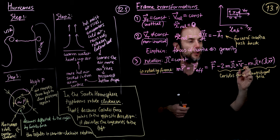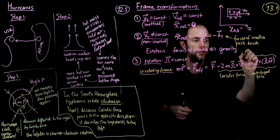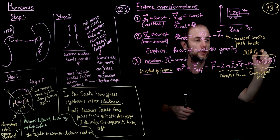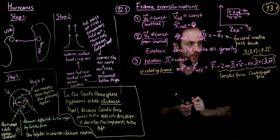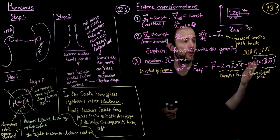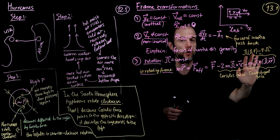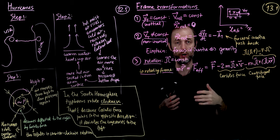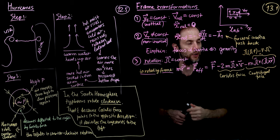We also showed that this expression can be rewritten in a more familiar form: omega times (omega dot r) minus r times omega squared. You can immediately see the centrifugal character — omega squared times r — and the correction term that handles cases where omega and r are not perpendicular to each other.